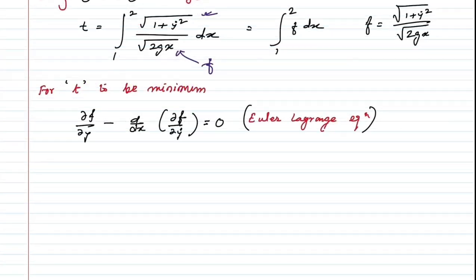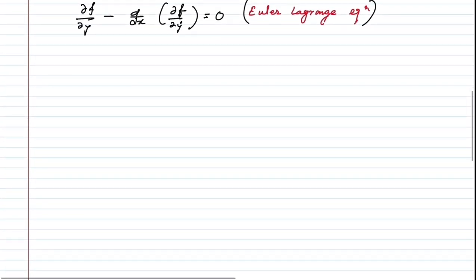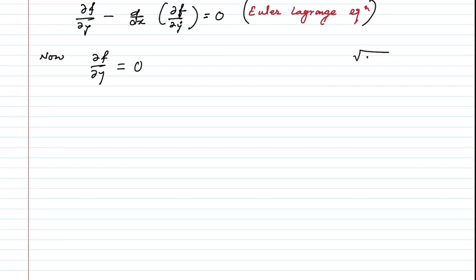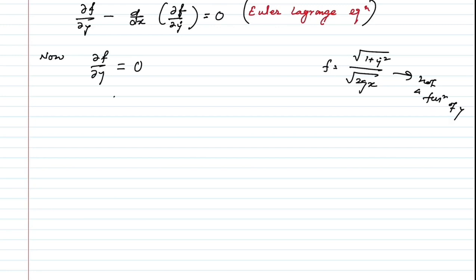For T to be minimum, F must satisfy the Euler-Lagrange equation: ∂F/∂y − d/dx(∂F/∂ẏ) = 0. Since F contains ẏ but not y explicitly, ∂F/∂y = 0. Now let's compute ∂F/∂ẏ.